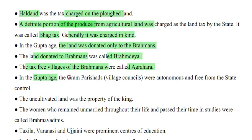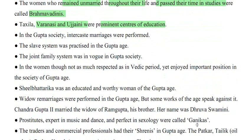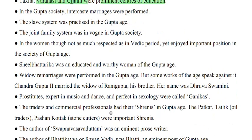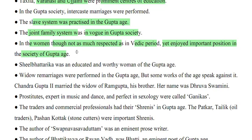In the Gupta age, village councils (gram parishads) were autonomous and free from state control. The uncultivated land was the property of the king. Women who remained unmarried throughout life and devoted themselves to studies were called Brahmavadhinis. Taksila, Varanasi and Ujjaini were prominent centers of education. Inter-class marriages were performed. The slave system and joint family system were practiced. The condition of women, though not as respected as in the Vedic period, still held an important position in Gupta society.